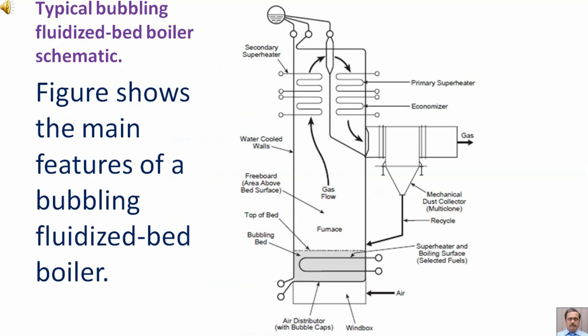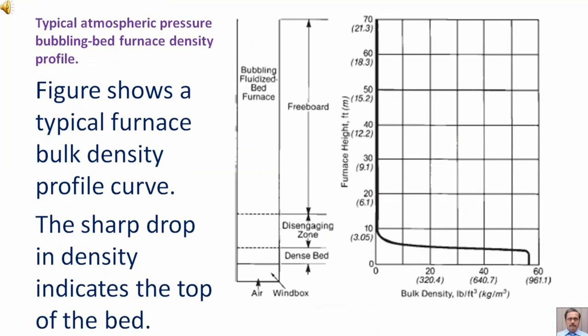Typical bubbling fluidized bed boiler schematic. Figure shows the main features of a bubbling fluidized bed boiler. We have already discussed this figure. Figure shows a typical furnace bulk density profile curve. The sharp drop in density indicates the top of the bed.